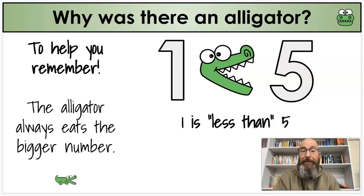Or we might do it this way. Now the five is bigger than one, so it's going to eat that five, and one is less than five. So the alligator is really just there to help you remember which symbol to use, whether it's going to be greater than or less than. Again, that's the only reason for the alligator.